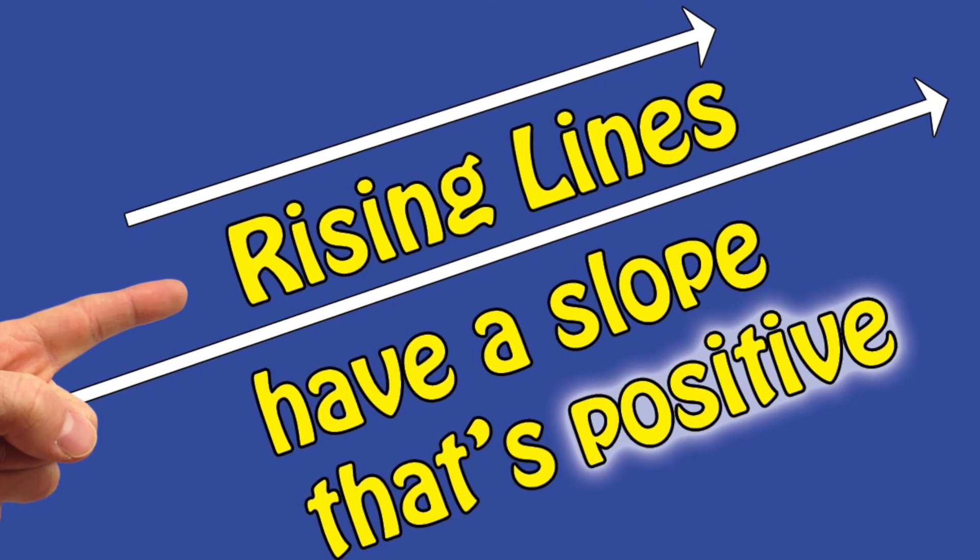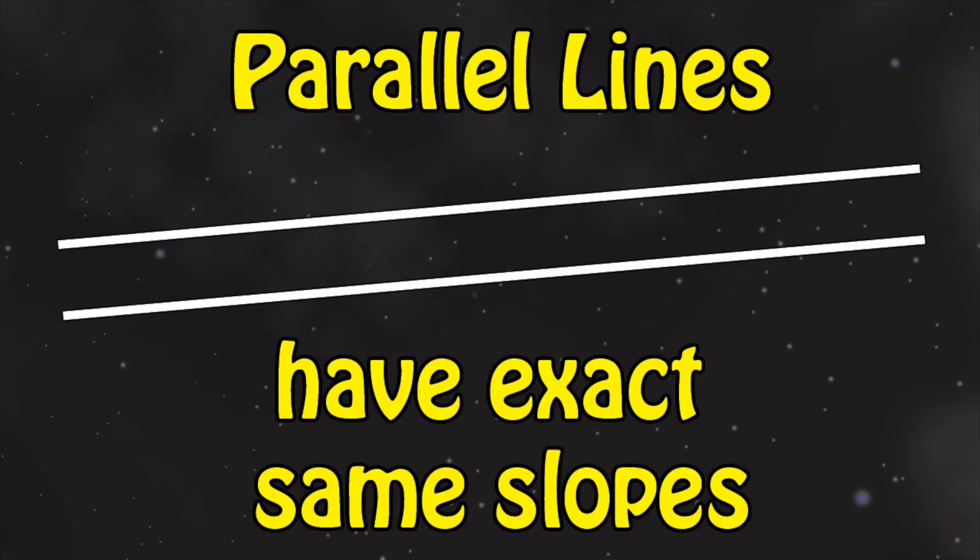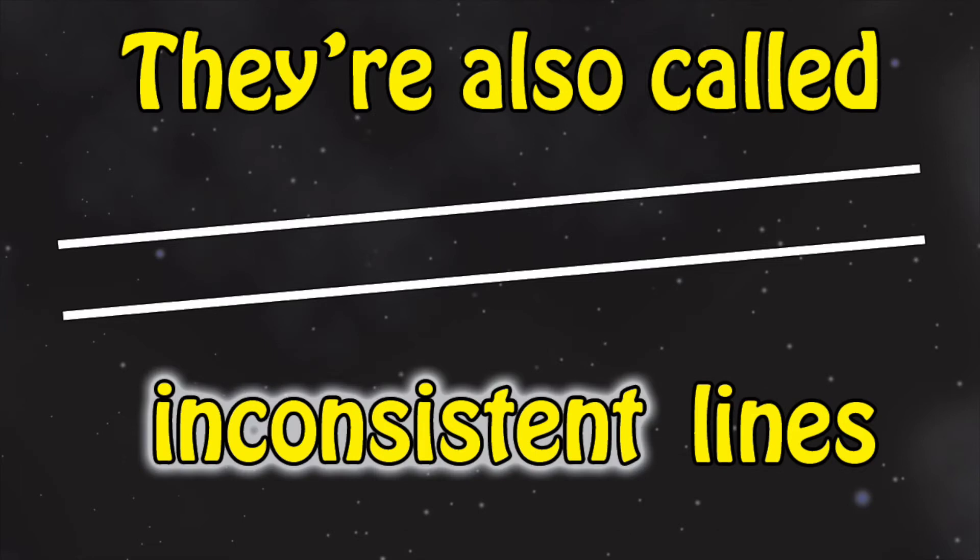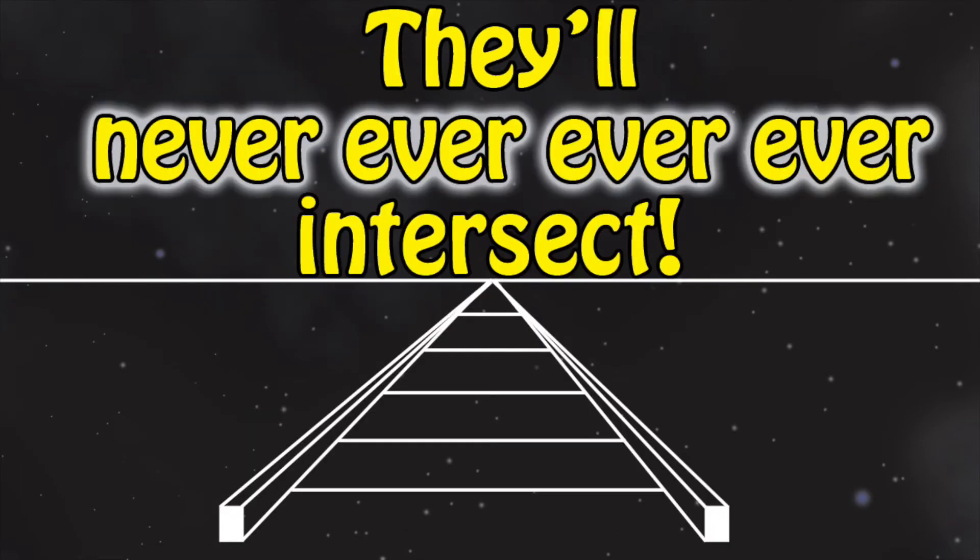Rising lines have a slope that's positive. Falling lines have a slope that's negative. Parallel lines have exact same slopes, they're also called inconsistent lines. They'll never, ever, ever, ever intersect.